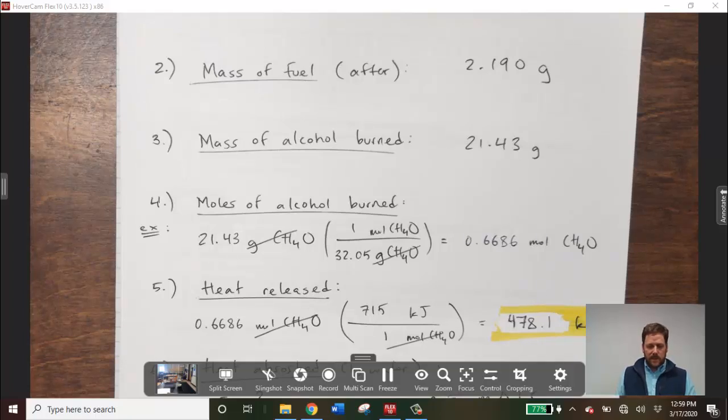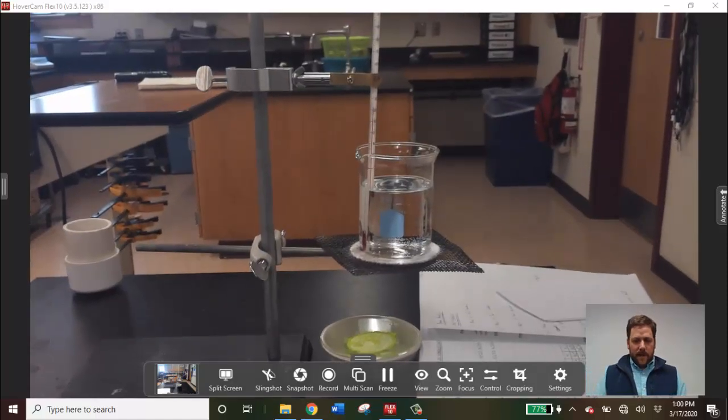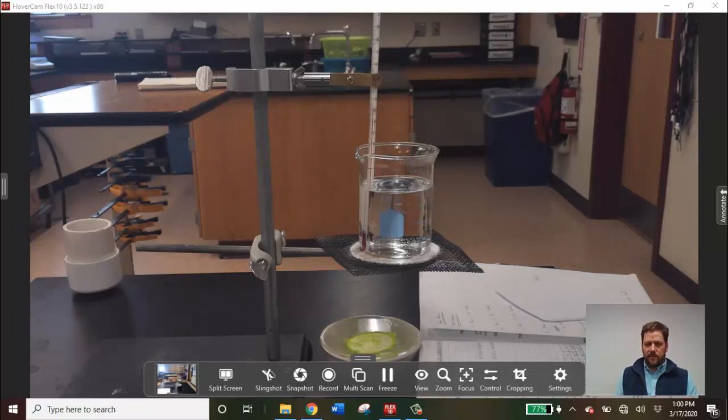Last but not least, we want to see how much energy the water actually absorbed. And if you remember, looking at our apparatus here, the water was absorbing most of that heat. However, a lot of the heat was probably absorbed by the air in the room. A lot of the heat was probably absorbed by that ring support, that wire gauze and the beaker itself. So don't be surprised when we see a value for heat absorbed by the water much less than the value we just calculated in question number five.